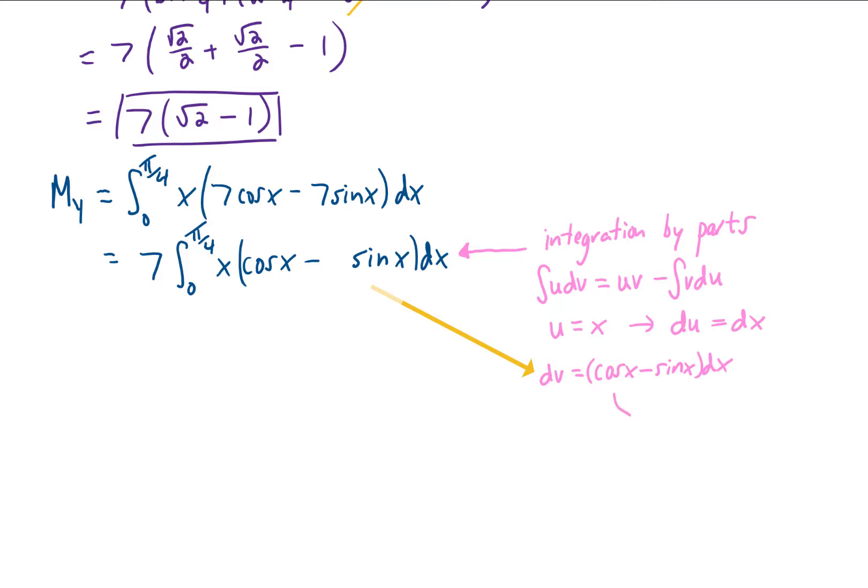If we choose that for our dv, then we can integrate to get our v. And if we integrate cosine, we get sine. And if we integrate sine, we get negative cosine. Taking what we got for our u, our v, and our du, and plugging them back into this formula for integration by parts, it's going to give us that this integral turns into the following.